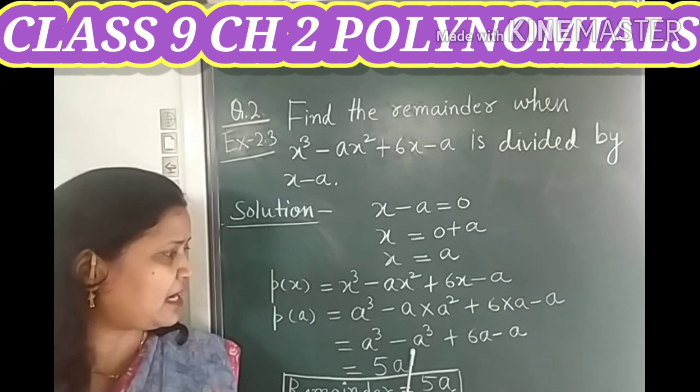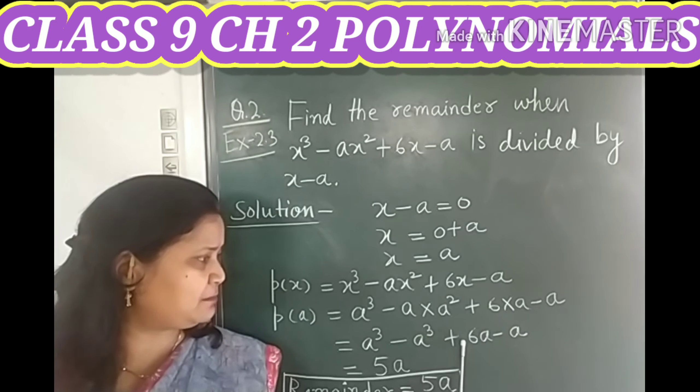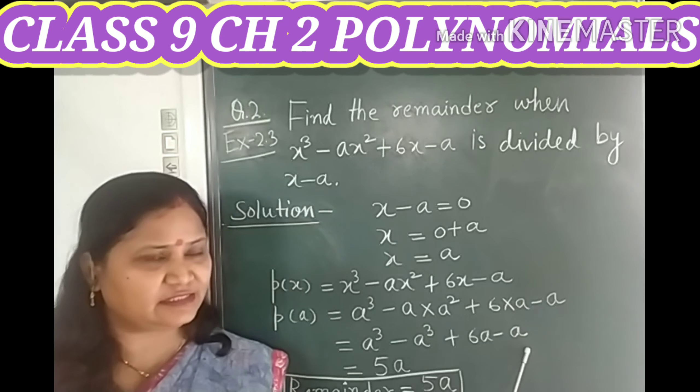and when this 6 is multiplied by a, it becomes plus 6a and minus a you can write it as it is.